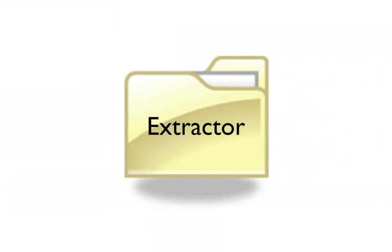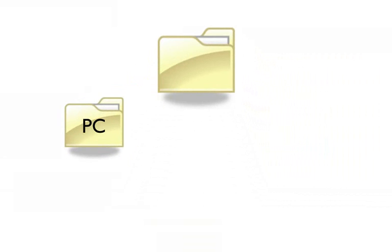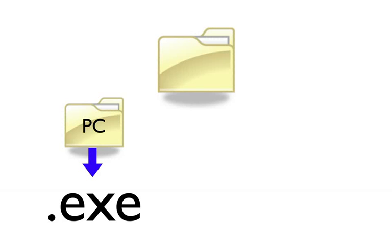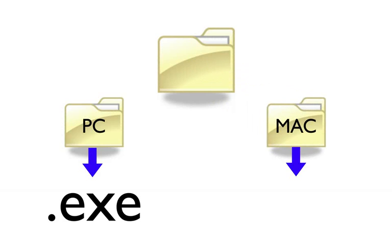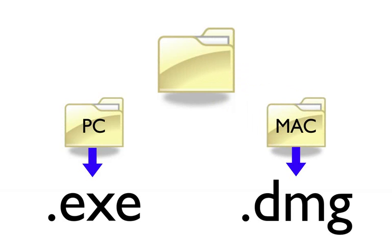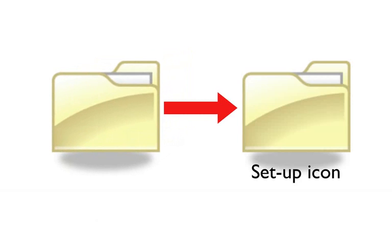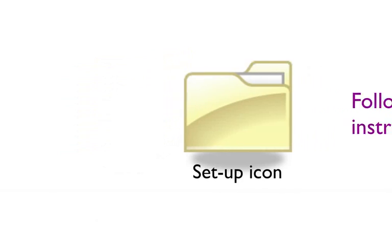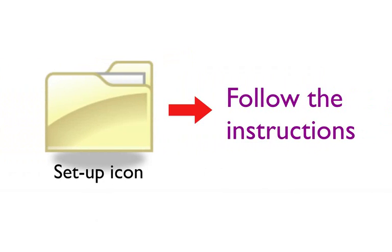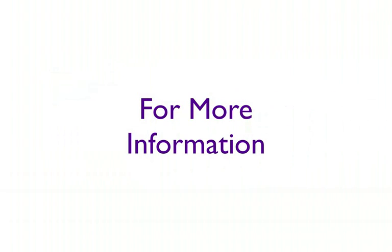Once the files are downloaded, open the Extractor file by double-clicking on the folder. Then locate the file. PC users will double-click on the file with a .exe extension, and Mac users will double-click on the file with a .dmg extension. Once the files are opened, locate and double-click on the Setup icon, then follow the instructions.